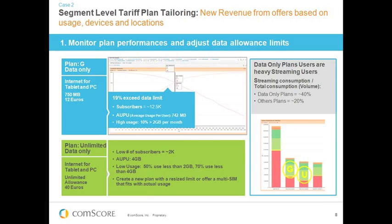The second case study is slightly different. Rather than looking at individual subscribers, we're looking at the subscriber base as a whole — specifically across all existing tariff plans and how subscribers within those plans vary. This gives us a tool to understand how subscribers are behaving within the tariff plans we've defined and identify opportunities to reprofile or introduce new tariff plans. We'll focus on two imaginary tariffs: Plan G, a limited data plan designed for tablets and PCs.